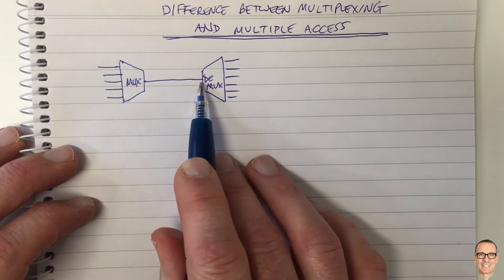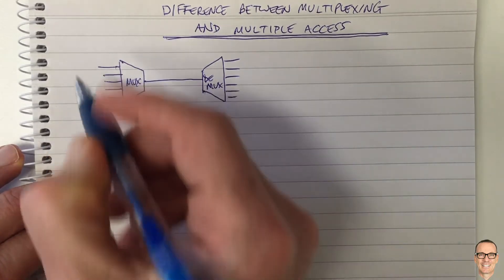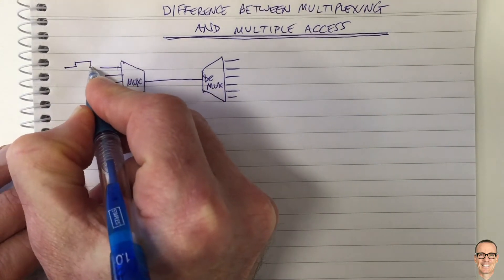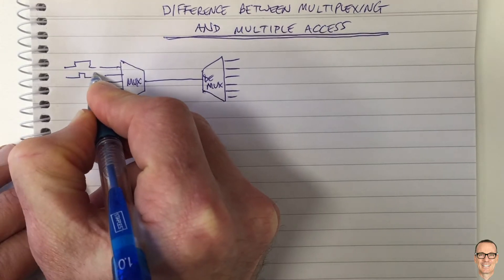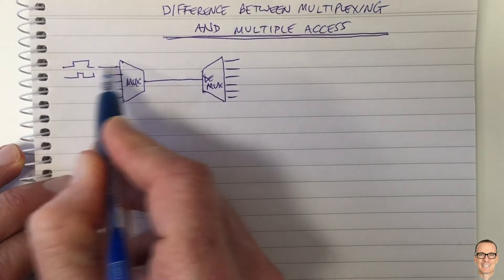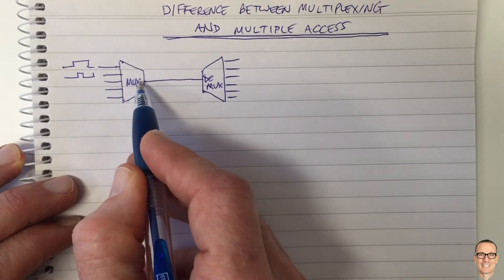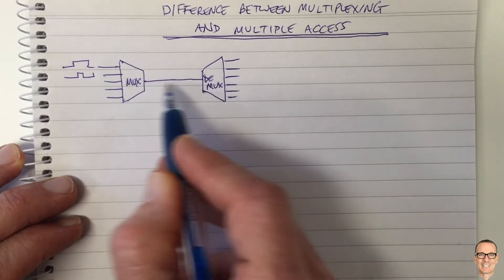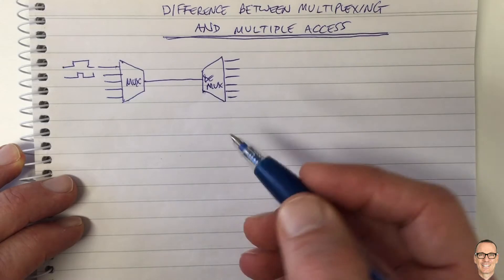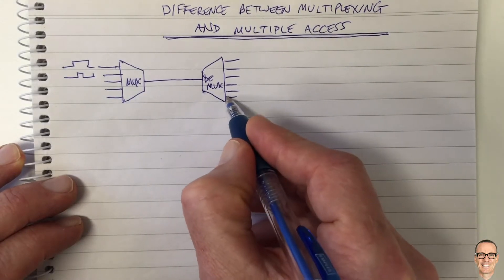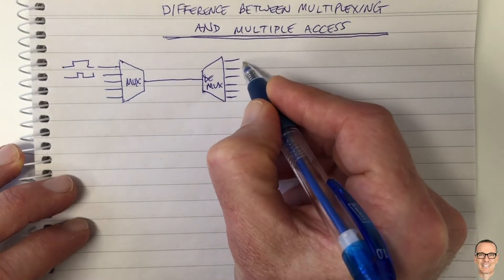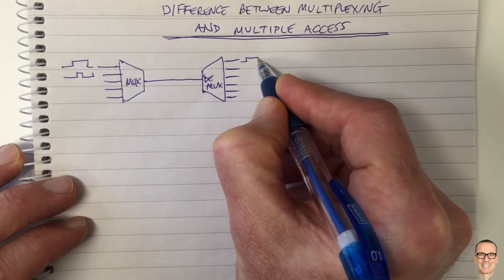And then you have a DEMUX at the other end to go back to the individual data streams. So you've got a high rate link in the middle and lower rate links coming in. This is often the case in a network where you have low rate links from the access part of the network, and in the multiplexer you access a high rate link as a backhaul into the core of the network. And then you recover the original streams at the output.